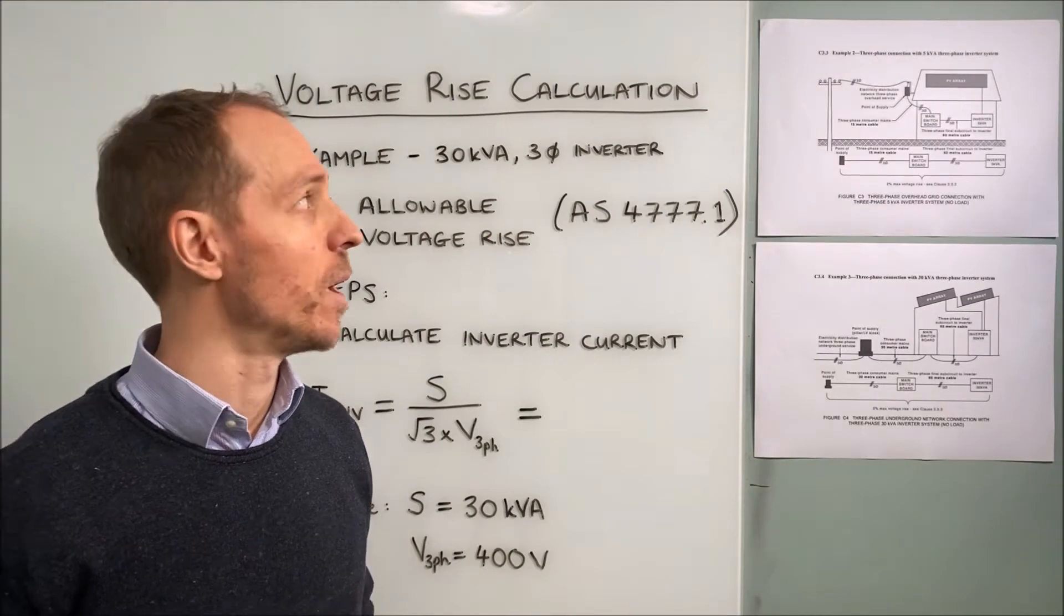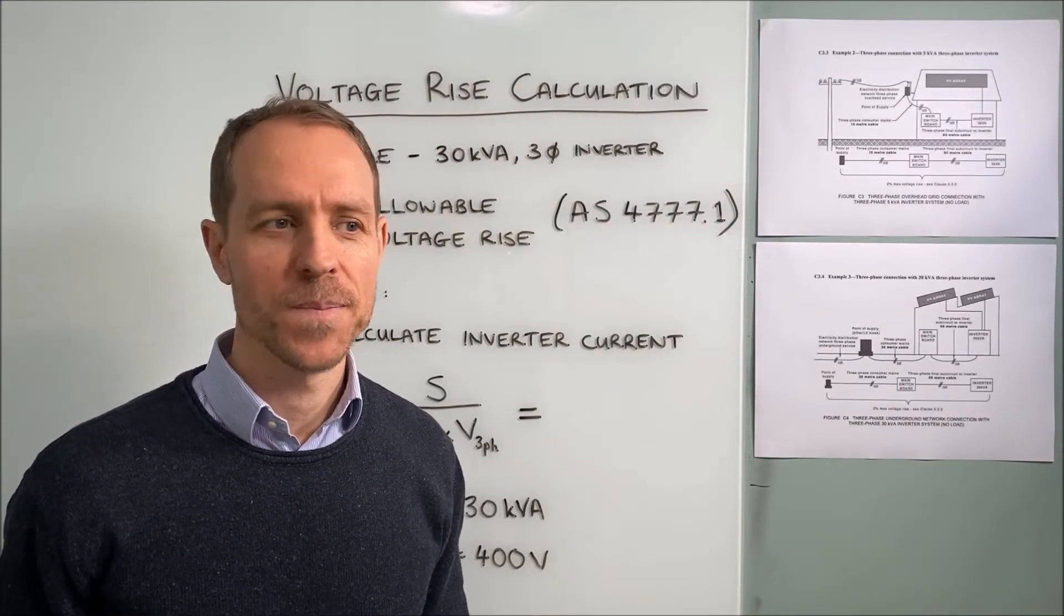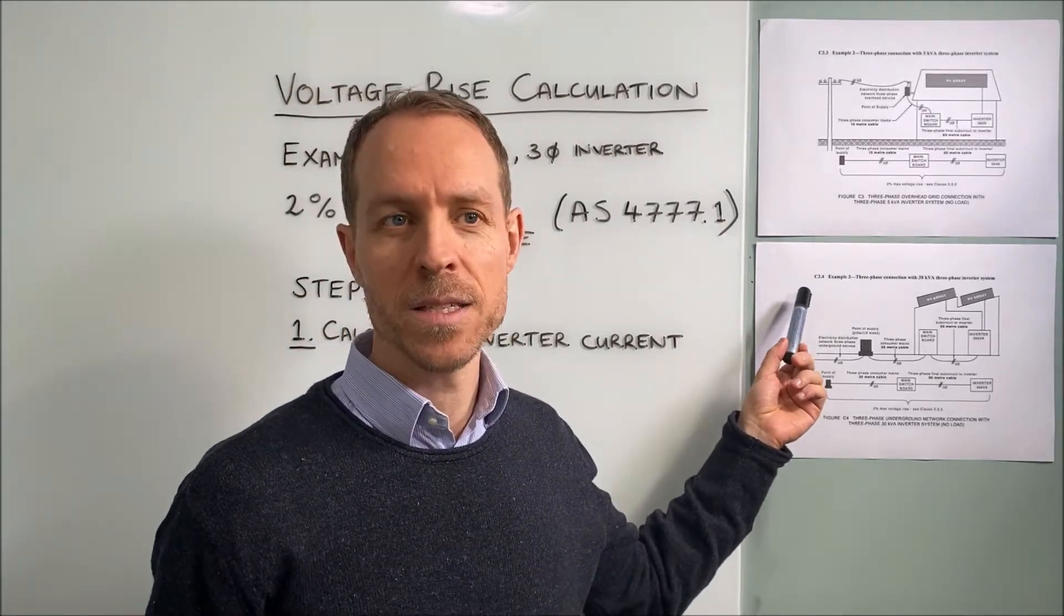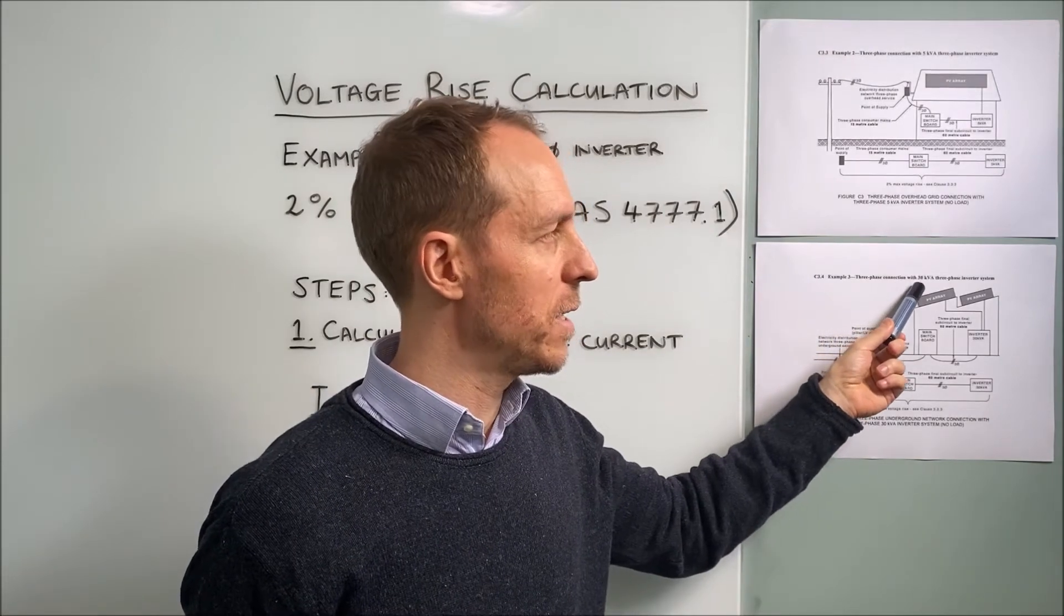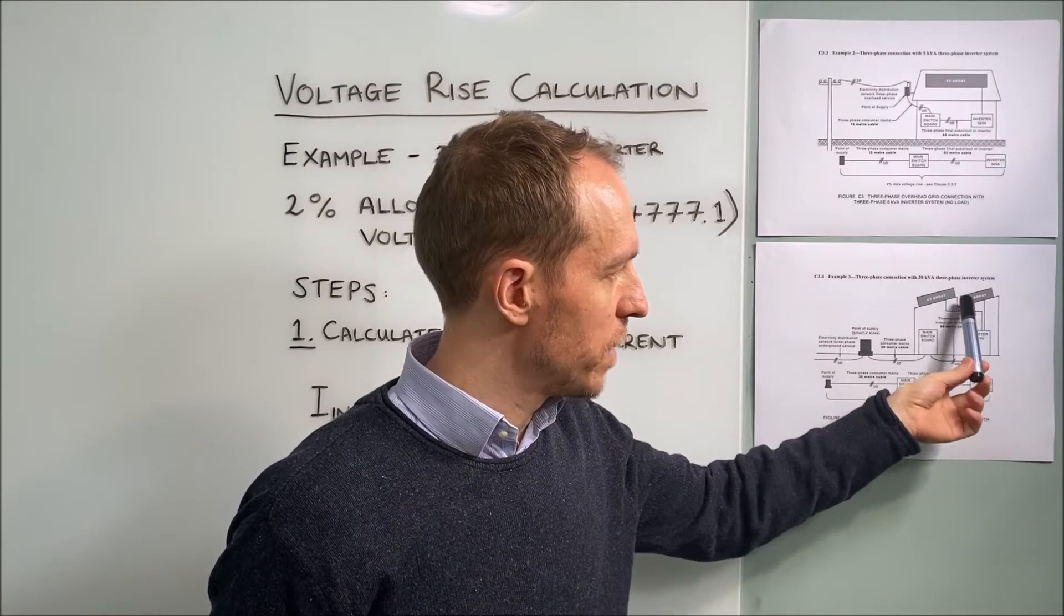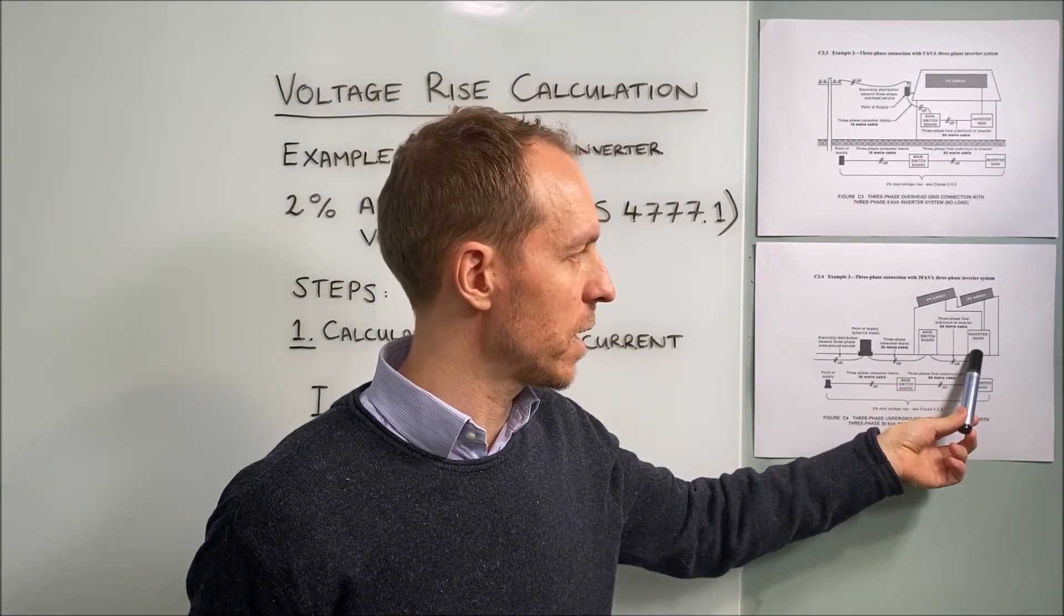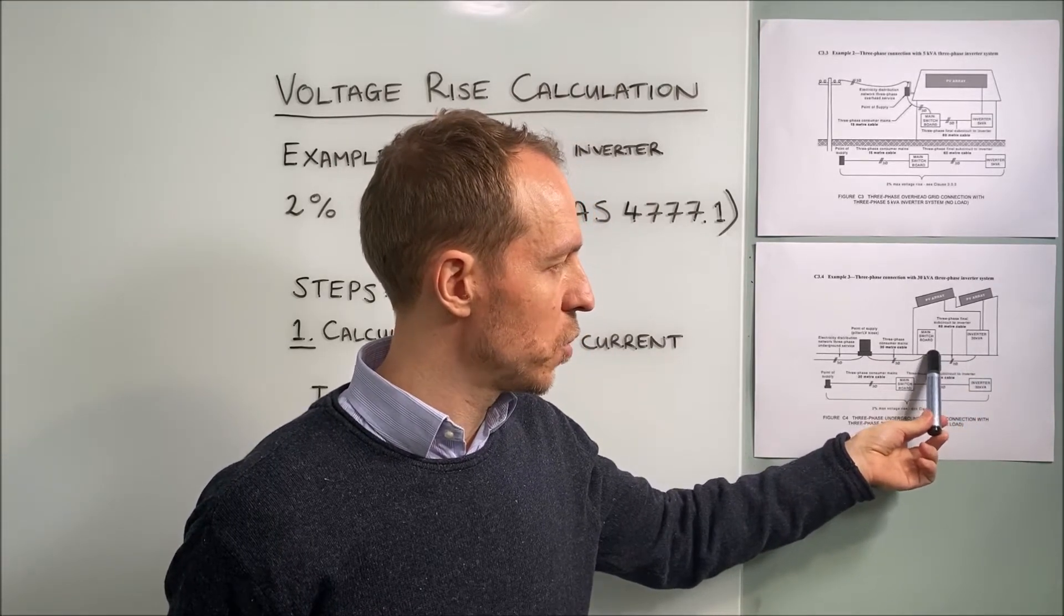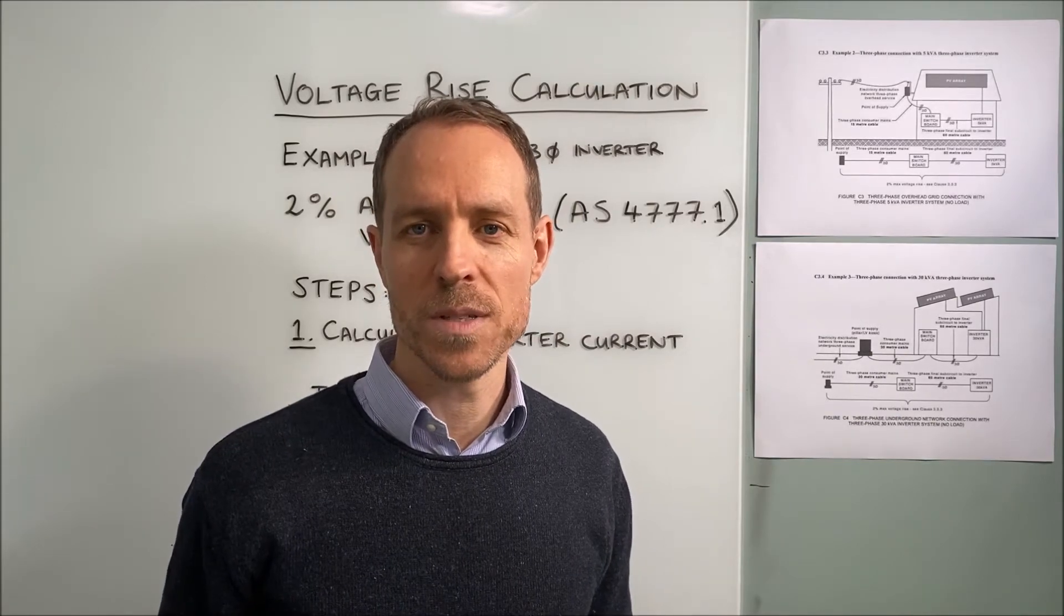Today I'm going to show you how to perform a voltage rise calculation by hand and using software. The example is going to be based on that taken from AS4777. This is a three-phase 30kVA inverter system. We have the two sets of PV arrays connected to the 30kVA inverter and two underground cable sections connected to the point of supply.